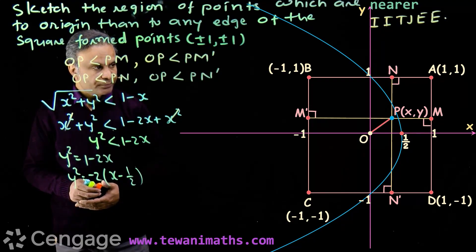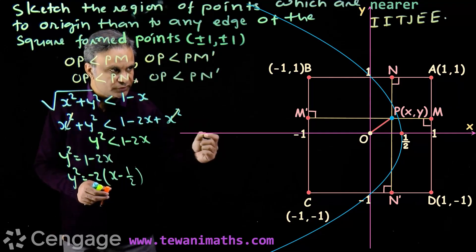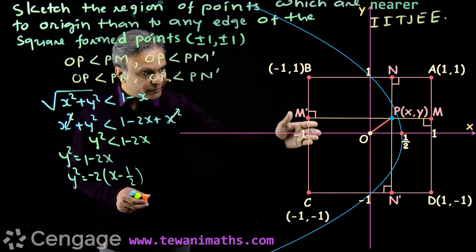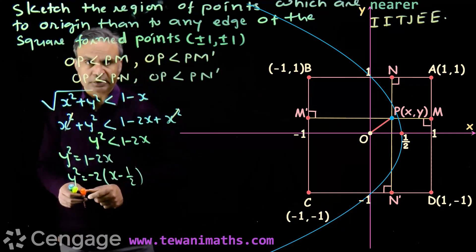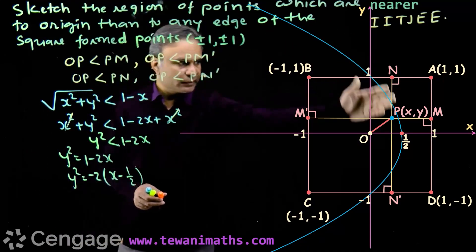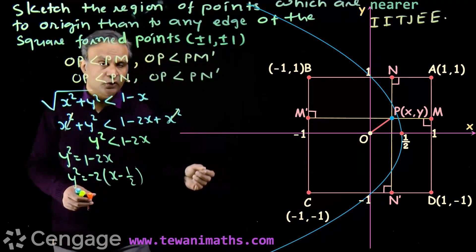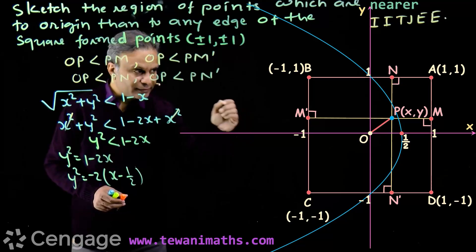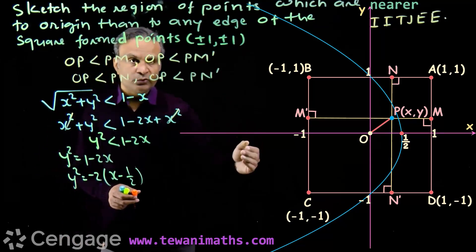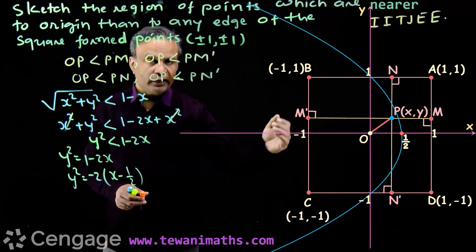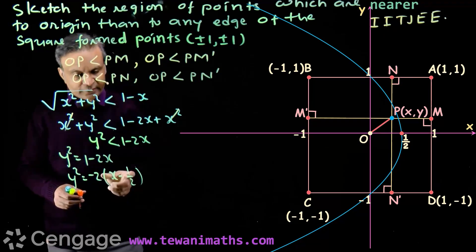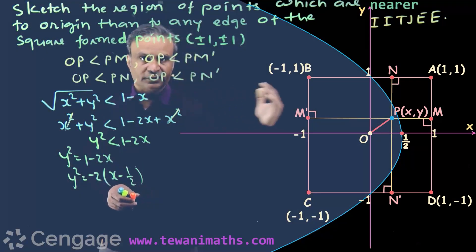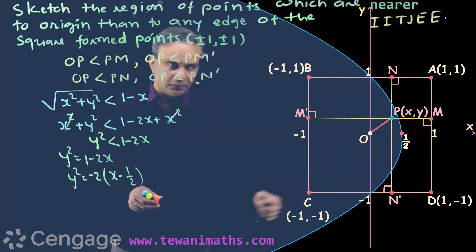Point P is nearer to the origin than to edge AD. Here, edge AD is the directrix and the origin is the focus of this parabola. Points lying on the parabola are equidistant from the origin and edge AD. But since point P is nearer to the origin than to edge AD, point P will lie in the interior region of this parabola.